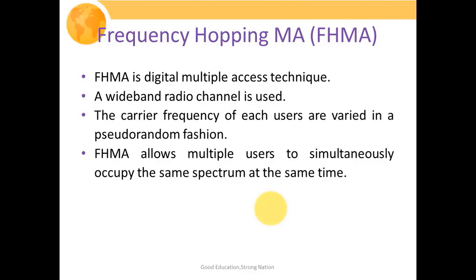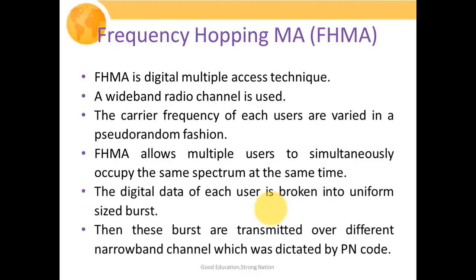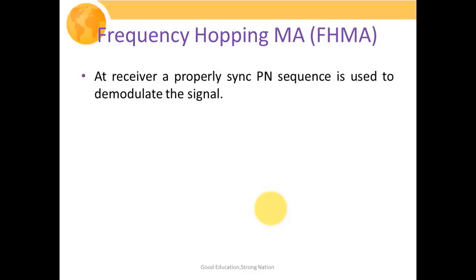The digital data of each user is broken into uniform-size bursts, which are then transmitted over different narrow-band channels dictated by the PN code. The carrier frequency is selected with the help of the PN code. At the receiver, a properly synchronized PN sequence is used to demodulate the signal, because without proper synchronization it is not possible for the receiver to demodulate the signal, since it cannot generate the same carrier frequency as used at the transmitting site.